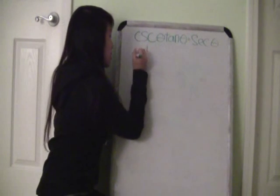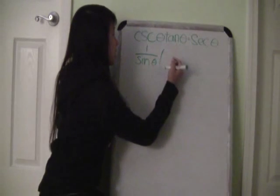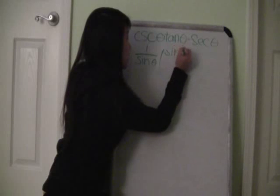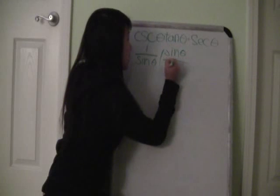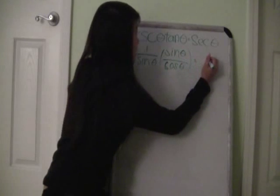Cosecant theta is 1 over sine theta times tan theta, which is sine theta over cosine theta, equals secant theta.